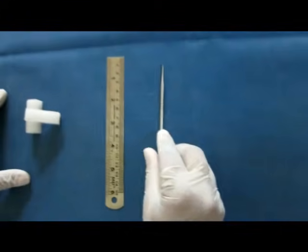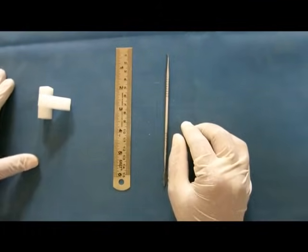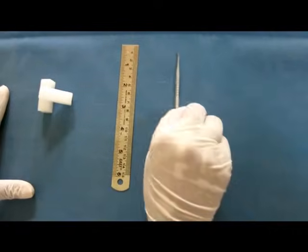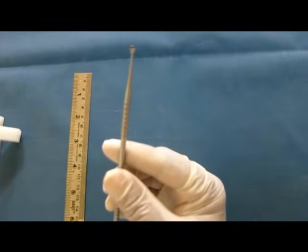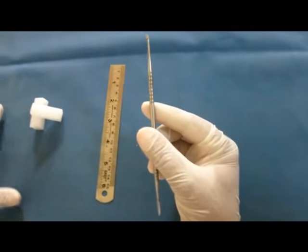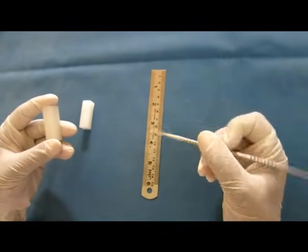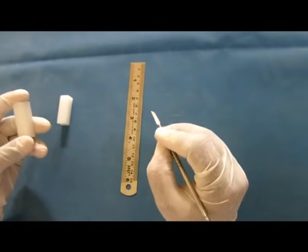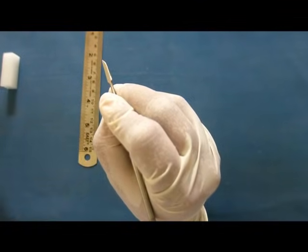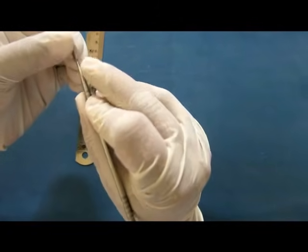These are the armamentarium. Now, coming to the general principles of carving. Before tooth carving, we should understand two important things. One is instrument grasp - how to hold the instrument. If the operator is right-handed, the instrument is held in the right hand and the block in the left. We normally hold a pen in what's called a pen grasp, but for carving we use a modified pen grasp.